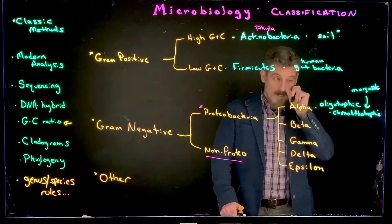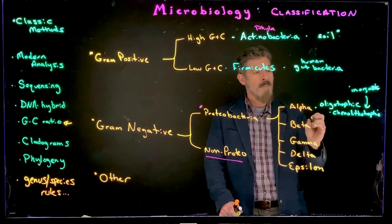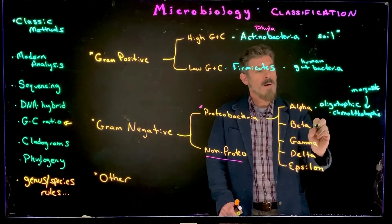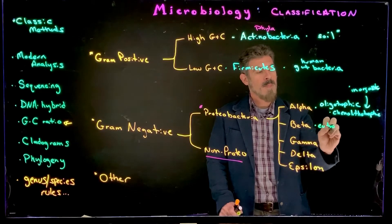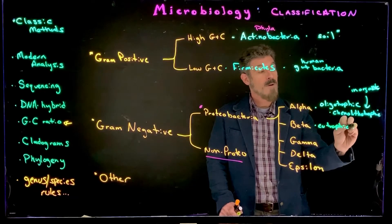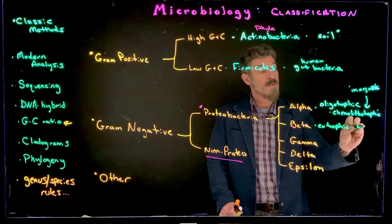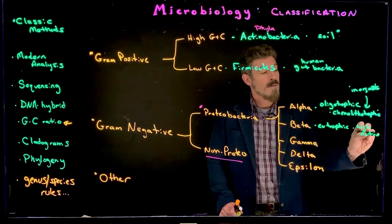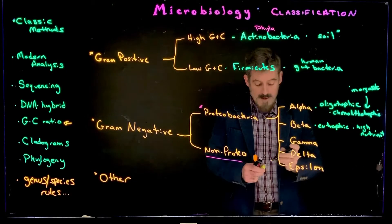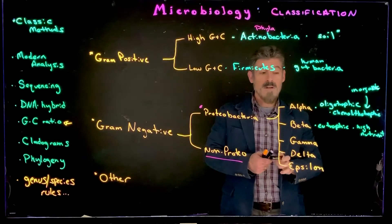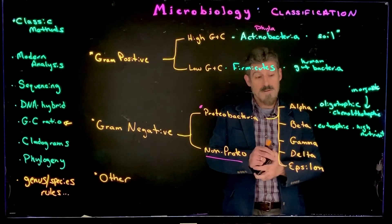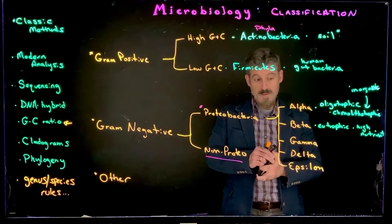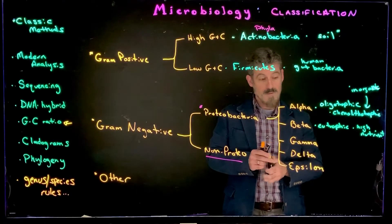Beta-proteobacteria are eutrophic — they require high nutrients. Pathogens tend to belong to this particular group.